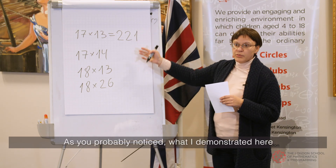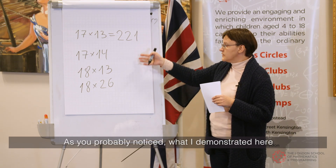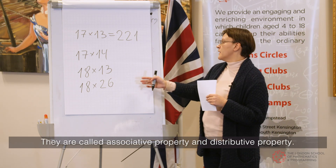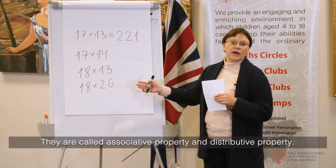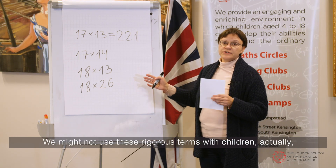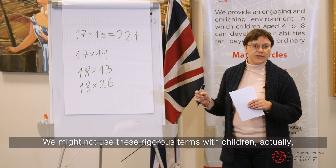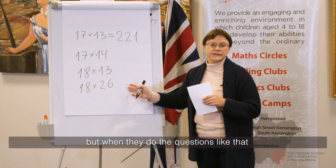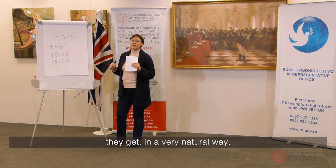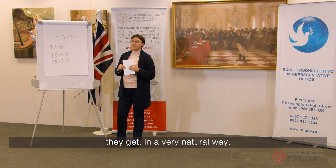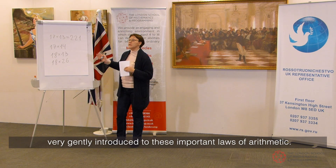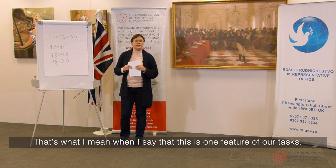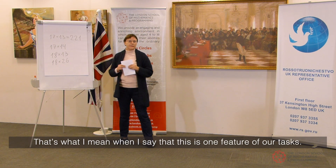As you probably noticed, what I demonstrated here are actually properties of multiplication — they're called the associative property and the distributive property. We might not use these rigorous terms with children; we don't want to scare them. But when they do questions like that, they get introduced in a very natural, very gentle way to these important laws of arithmetic. That's what I mean when I say this is one feature of our tasks.